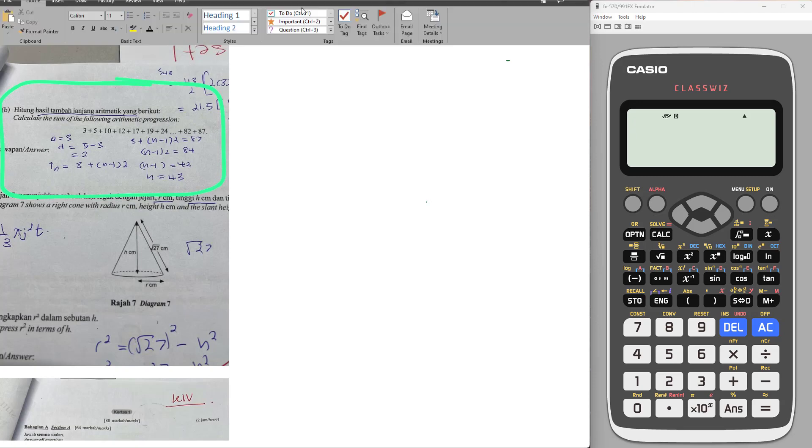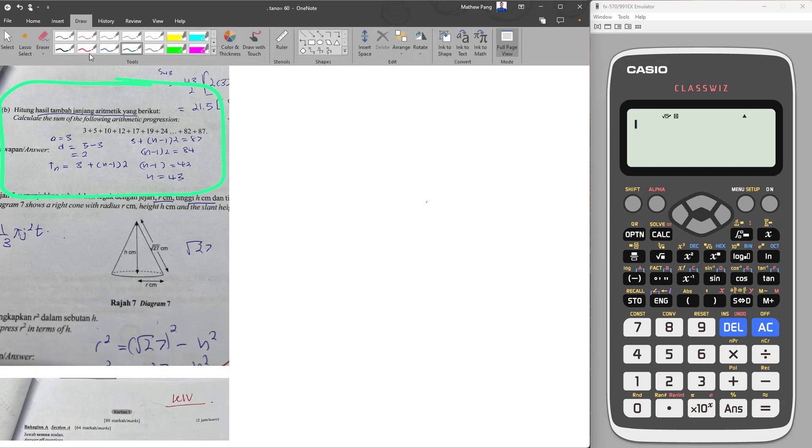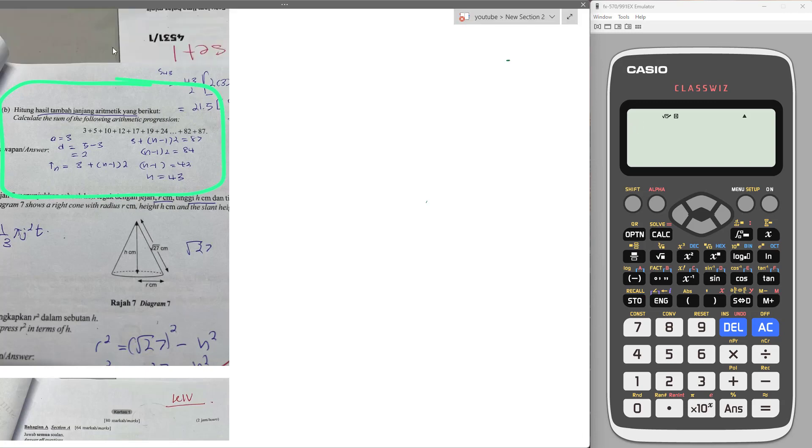So before we start to sum all of them, we try to see the relationship of each of the numbers here: 17, 19, 24, dot dot dot, and then we have 82 and 87. If you see carefully, here is basically plus 2, here is plus 5, then here is plus 2, here is plus 5, and so on. We can see it keeps alternating plus 2 and plus 5.